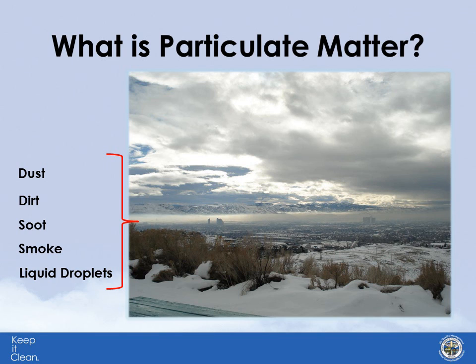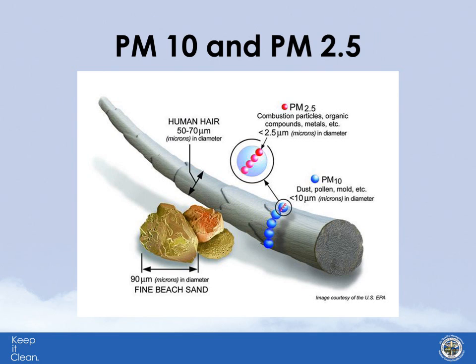During these inversions, pollutants can be trapped for several days at a time, basically until the weather changes and the inversion breaks and the wind blows it out of the valley. There are two sizes of particulate matter regulated by the EPA. Particles between 2.5 and 10 microns are called coarse particulates, or PM10, and are small enough to be inhaled and accumulate in the respiratory system. Particles of 2.5 microns or less are referred to as PM2.5, or fine particulates, and are a greater health risk than PM10 as they can reach deeper into the lungs.